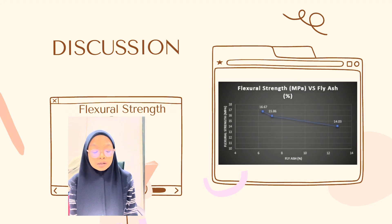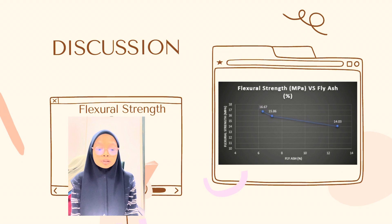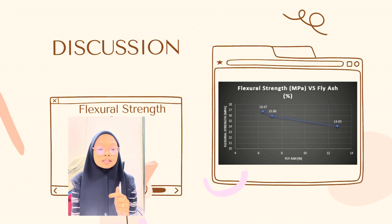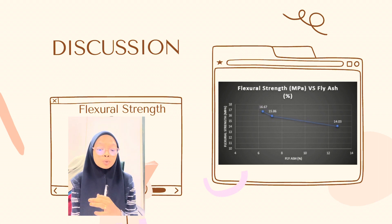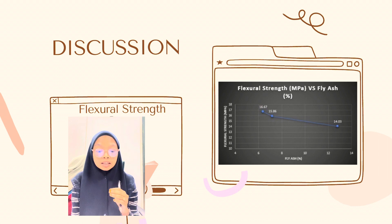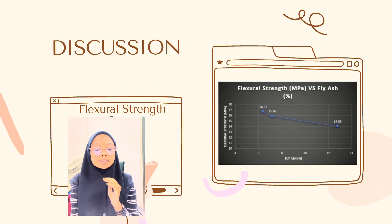From the flexural strength graph, the dosage of fly ash affected the flexural performance of the concrete. The first sample with 9.4% of fly ash dosage gave a flexural strength of 16.67 MPa, which is the highest among the 3 samples with 12.4% of epoxy resin. The value of flexural strength decreases as the dosage of fly ash increases, dropping from sample 2 at 15.86 MPa to sample 3 at 14.3 MPa.